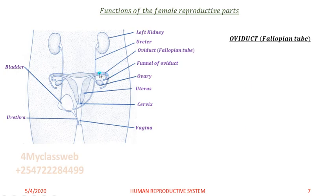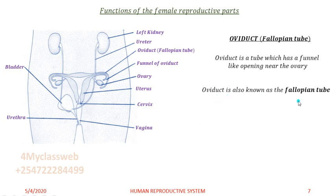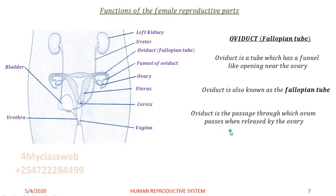Now let us look at the oviduct, or fallopian tube. The oviduct is a tube with a funnel-like opening near the ovary. If you look at the head of the oviduct, it is wider so that it can accommodate the ovum. The oviduct is the passage through which the ovum passes when released by the ovary.